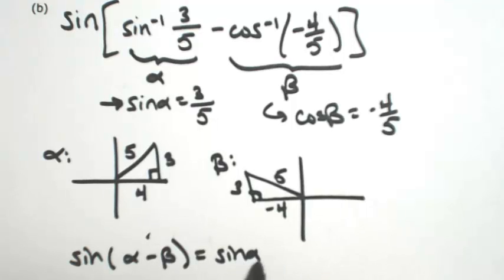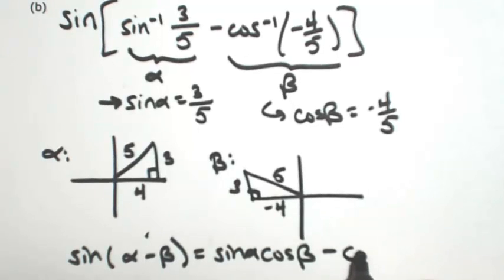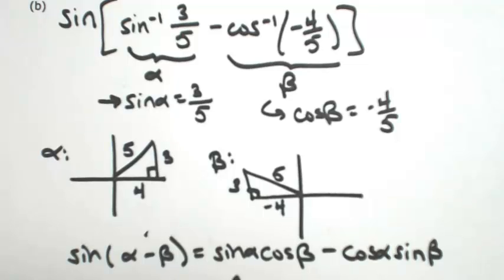So sine of the first angle, cosine of the second angle, keeping minus. Cosine of the first angle, sine of the second angle. It's just sine, cosine, cosine, sine, keep the sign.